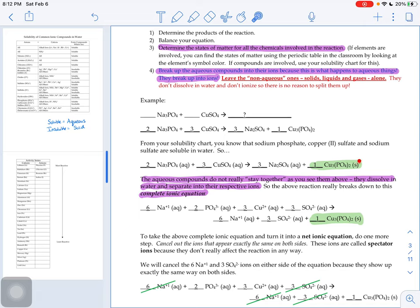Well, water does not rip apart copper two phosphate. Copper two phosphate is insoluble in water. It doesn't dissolve. And so that's what this part was all about. Leave the non-aqueous ones - solids, liquids, and gases - alone. They don't dissolve in water. Don't ionize. So therefore, there's no reason to split them up. So your solids, liquids, and gases, you're going to leave alone that look exactly the same from one line to the next.